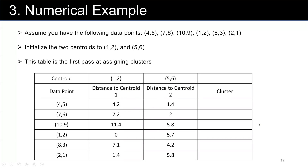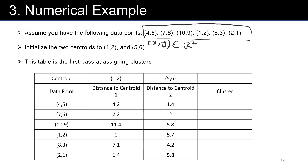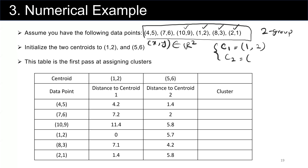Now let's take a look at our numerical example. We are given data points as pairs of x and y in two-dimensional real space: (4,5), (7,6), (10,9), (1,2), (8,3), and (2,1). We want to do a two-group classification — classify this data into two clusters. We start with two centroids. C sub 1 is (1, 2) and C sub 2 is (5, 6). These are random starting values; you can start with any other random values and see how you converge.